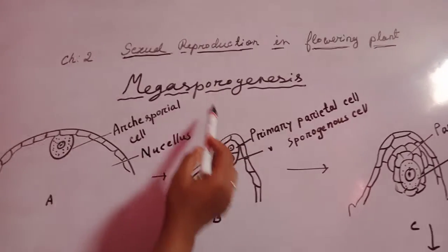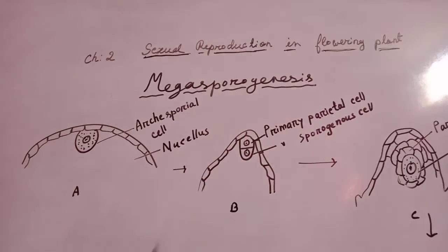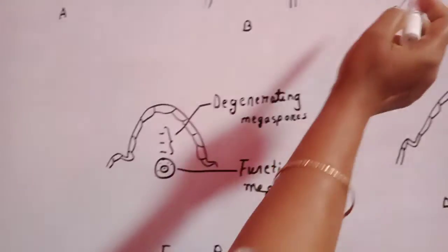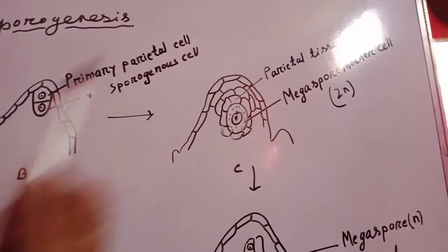Megasporogenesis is the process of formation of megaspore from megaspore mother cell.